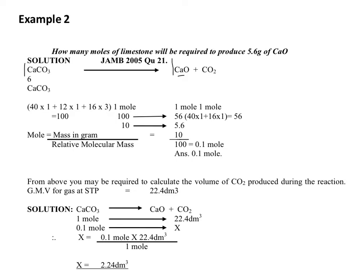For calcium carbonate, the atomic mass of calcium is 40, carbon is 12, and oxygen is 16. So it is 40 times 1, plus 12 times 1, plus 16 times 3, because there are 3 atoms of oxygen. That gives 40 plus 12 plus 48. When you sum it up it equals 100. So the relative molecular mass of CaCO3 is 100.